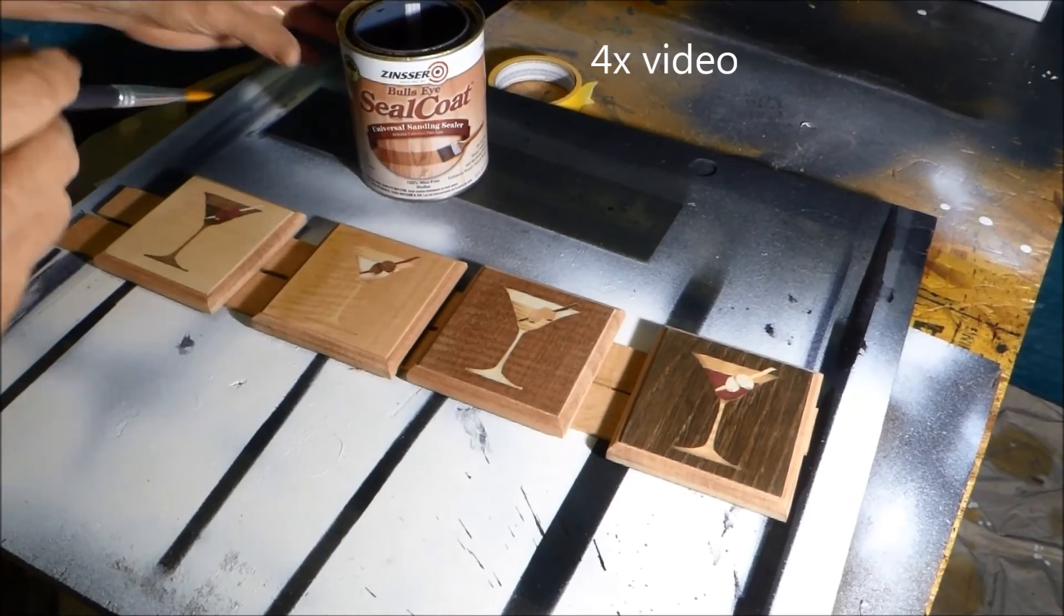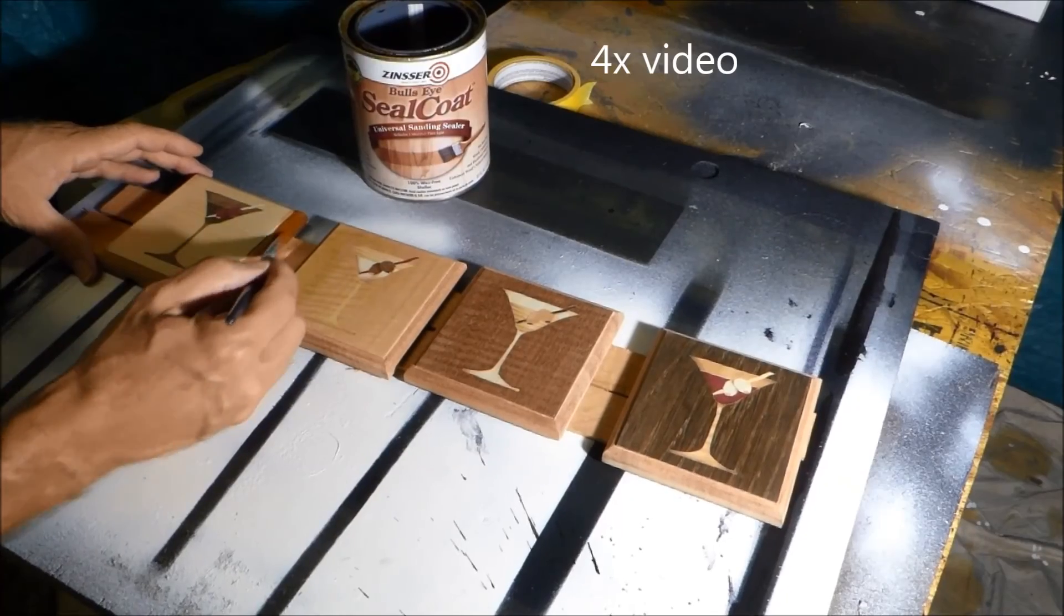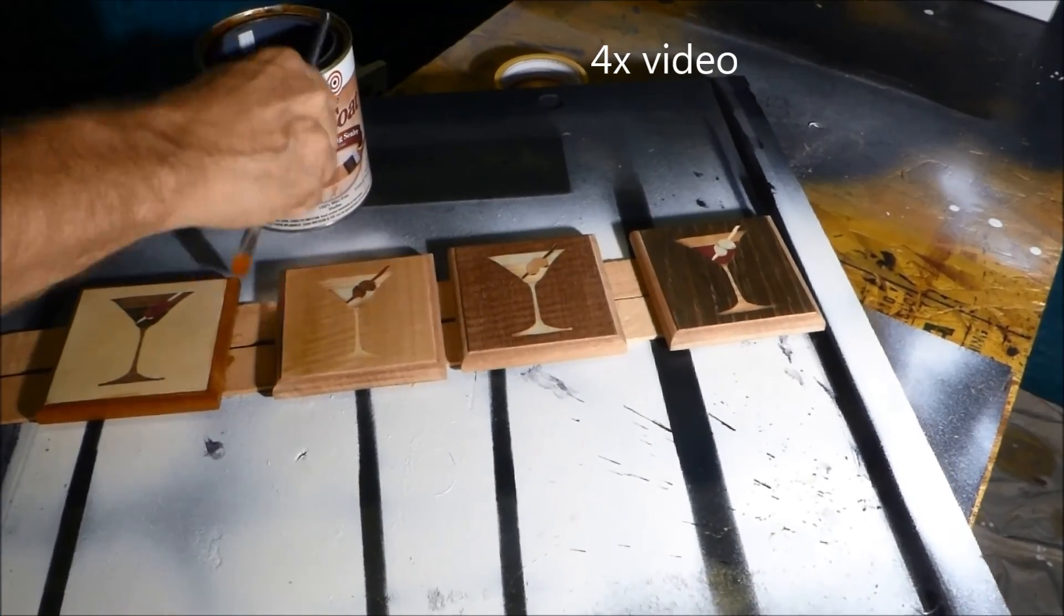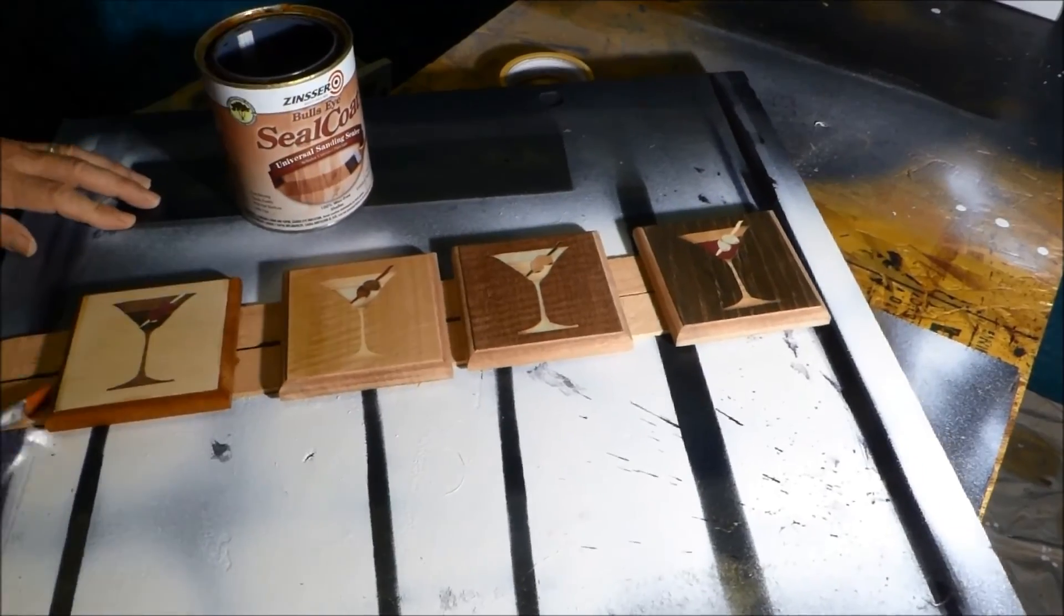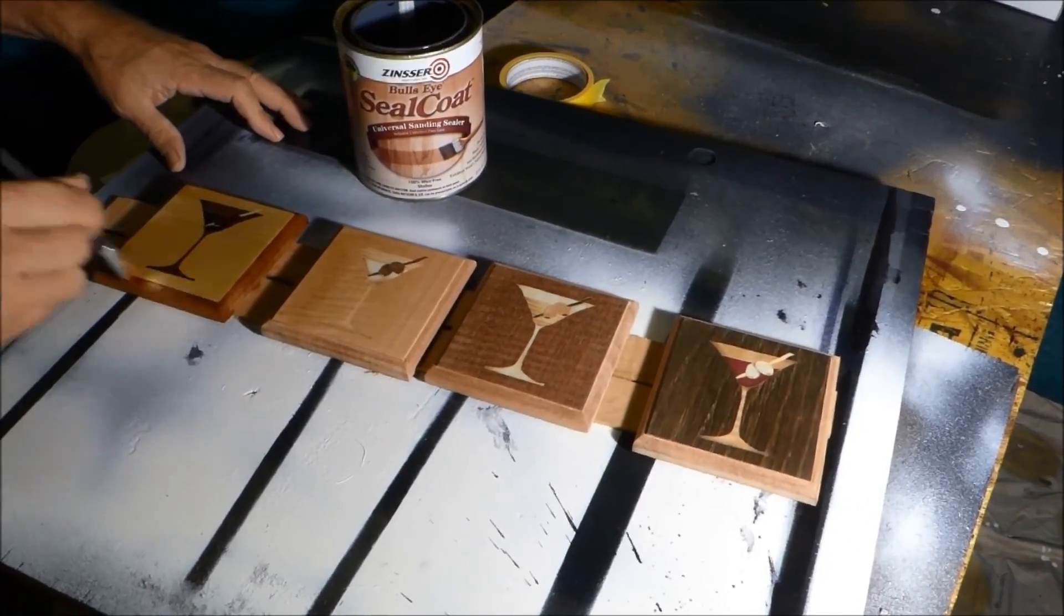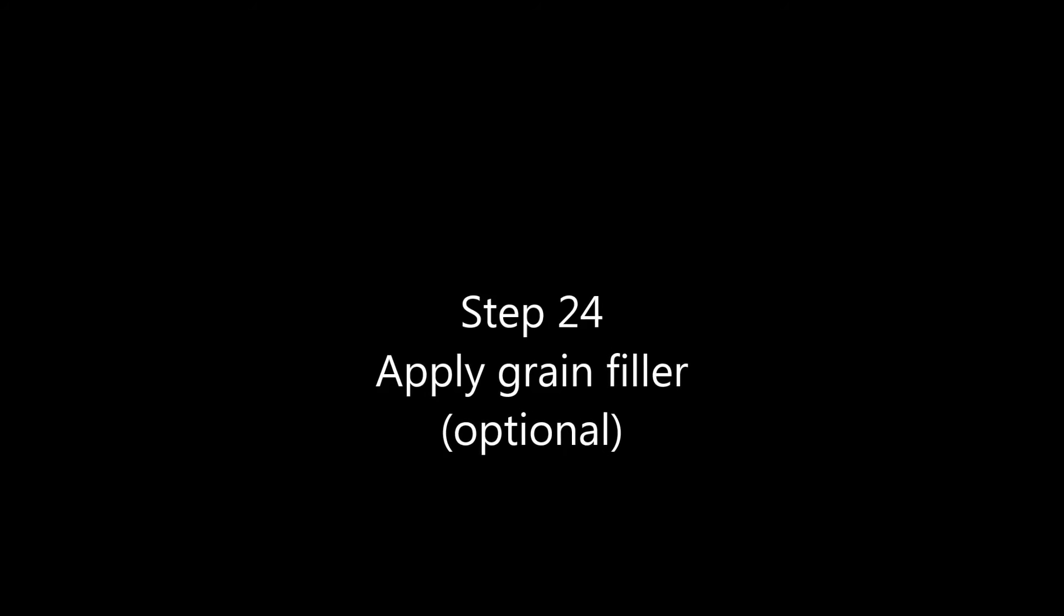Now we're going to begin finishing and I'm going to first seal with shellac. I'm doing that to seal the wood and then more importantly to bring out the color of the wood prior to the next step that I'm going to do which is apply a bit of a grain filler.